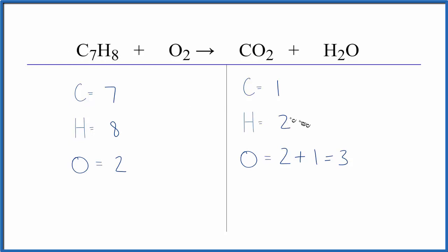Why don't we start by fixing the hydrogens? If we put a four here, two times four, that'll give us eight. So the hydrogens are balanced. The four applies to the whole water molecule, so we need to update the oxygens here. We have our two oxygens plus one times four gives us four. So now we have six oxygen atoms.